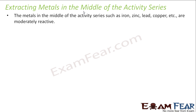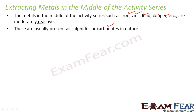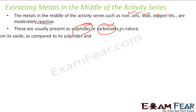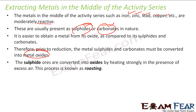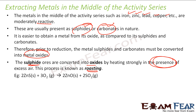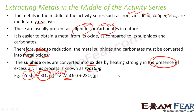For the metals in the middle reactivity series — such as iron, zinc, lead, copper, etc. — they are moderately reactive. These are generally present in carbonates or sulfides. But it is difficult to take out metals from carbonate or sulfide ores, so we will convert them into oxides. If it is sulfide, we can convert it into oxide by roasting — you heat in the presence of oxygen. For example, you have zinc sulfide with a lot of oxygen, you heat it, you get zinc oxide. This process is called roasting — roast a sulfide to oxide, in the presence of oxygen.